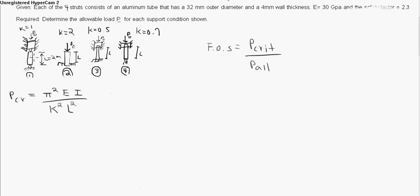The only thing that differs between column 1, column 2, column 3, and column 4 is the way that the ends are secured. Notice that this one, both ends are pinned. Therefore, both ends can rotate. Therefore, we say the fixity condition equals 1.